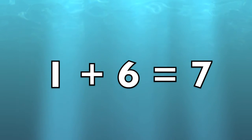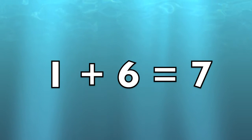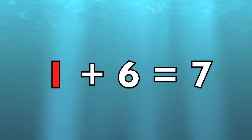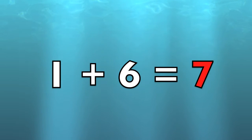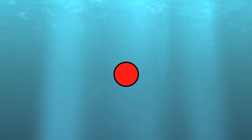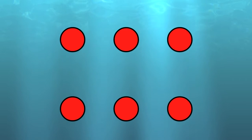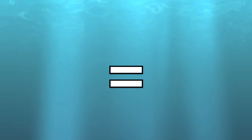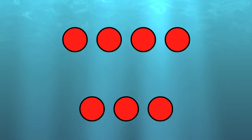One plus six equals seven. One circle plus six circles equals seven circles.